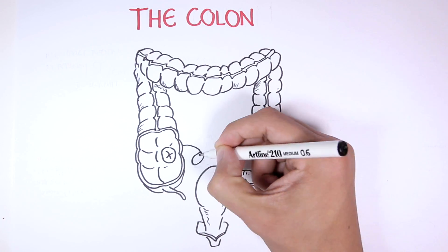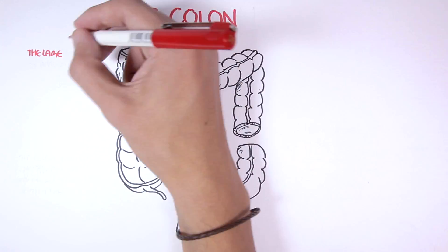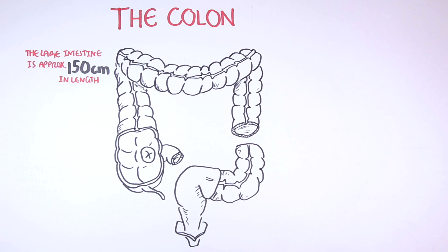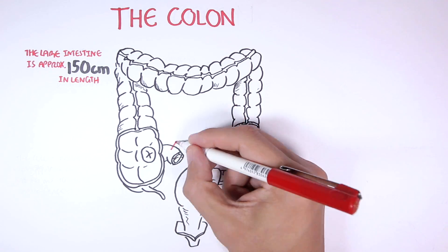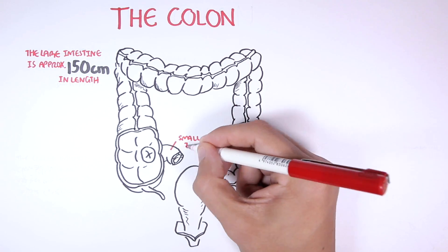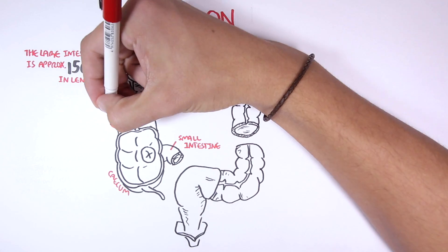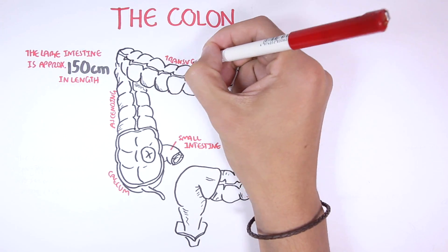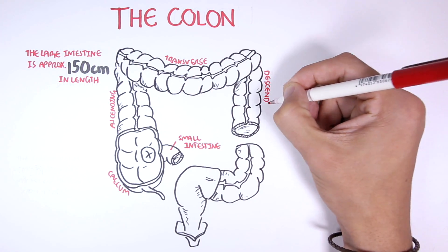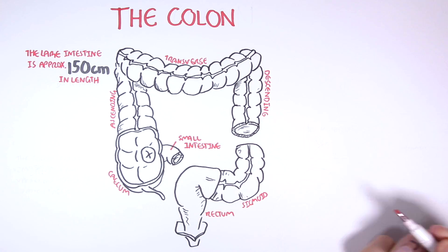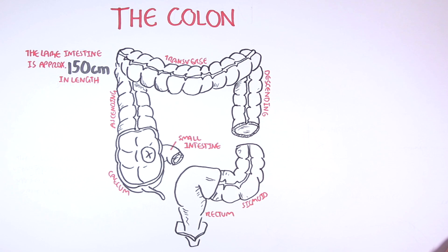The colon or large intestine is approximately a hundred and fifty centimeters in length. It is divided into a few sections. The small intestine will join to the first part of the large intestine known as the cecum. Then there is the ascending colon, the transverse colon, descending colon, sigmoid colon, and finally the rectum.